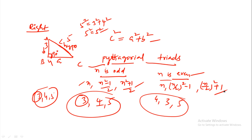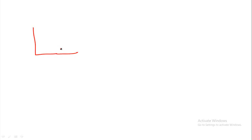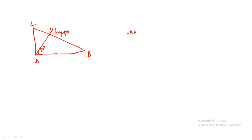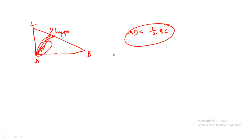In a right angle triangle, the midpoint of the hypotenuse is at a distance equal to half of the hypotenuse. This is a very very important property.